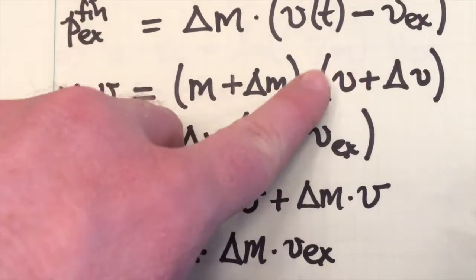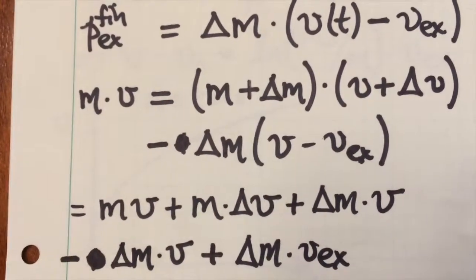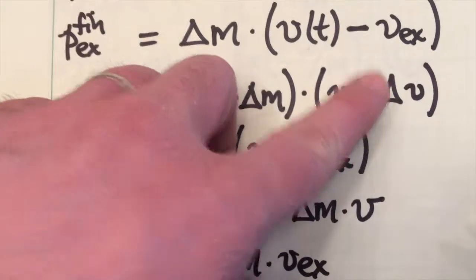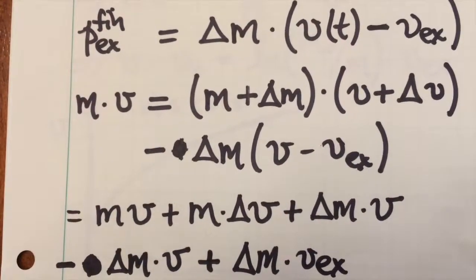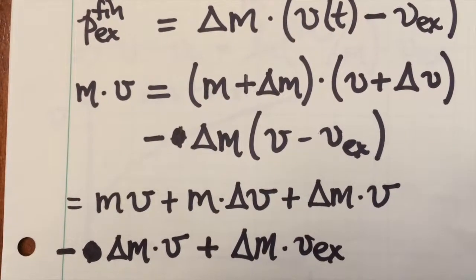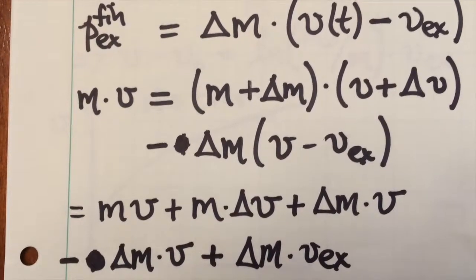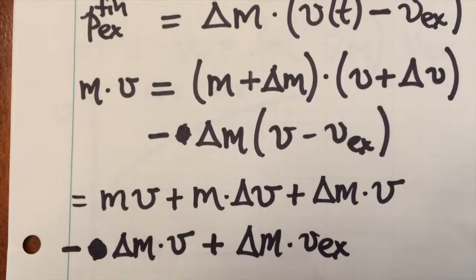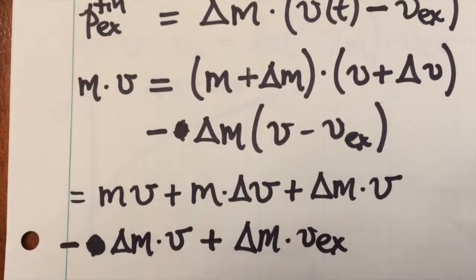Now, in reality, there would of course be a delta m times delta v term, but that's second order, so we ignore it to the approximation that we're applying here. So any time you have a delta quantity multiplied by another delta quantity, you assume that's small enough that you don't need to include it in this approximation.